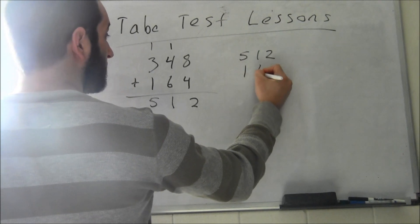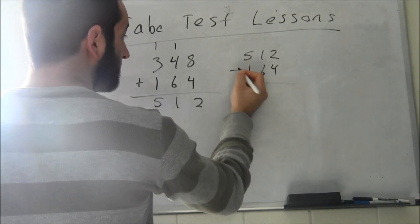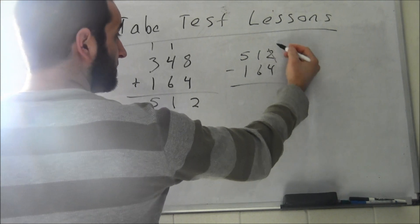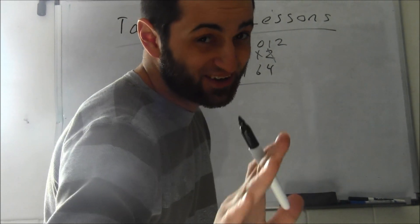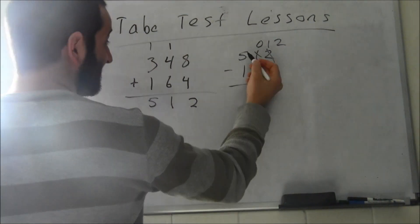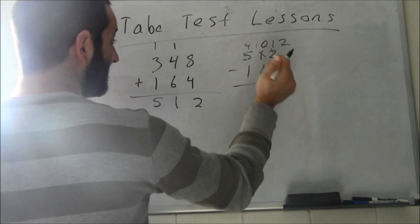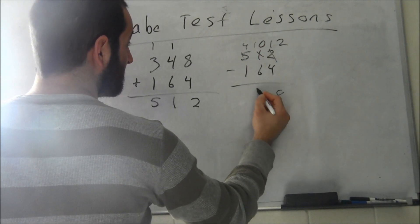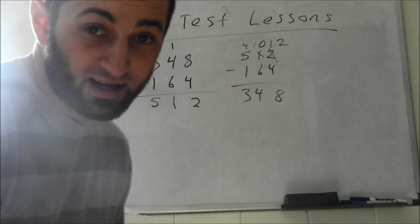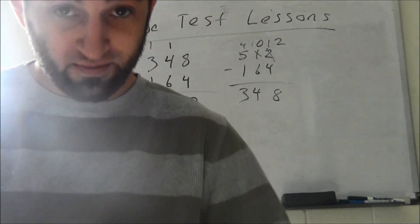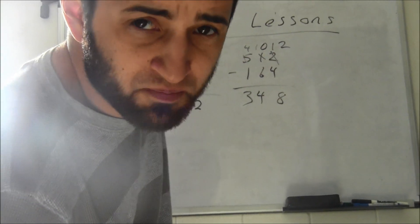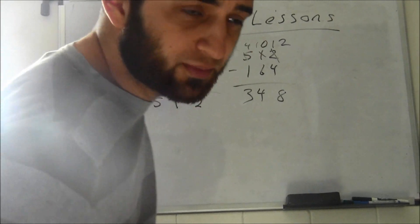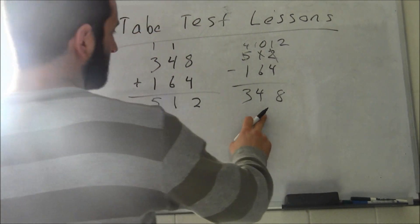To check this: 512 minus 164. You're gonna have to cross that and make it 12. This is getting crazy, I know. A lot of people have trouble subtracting when you have to cross the numbers out up here. It gets a little tricky - sometimes you gotta put a 9, sometimes it's a little crazy. But 348.